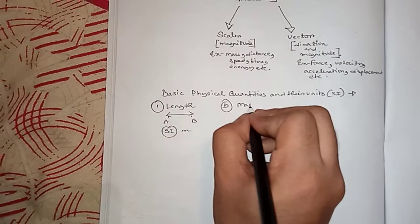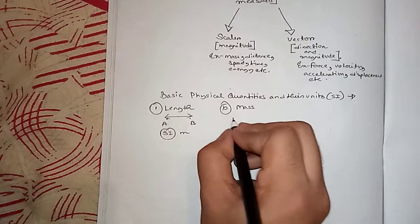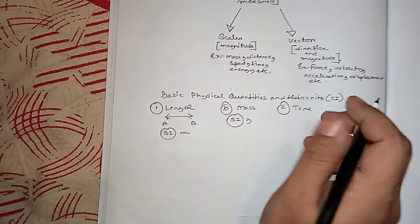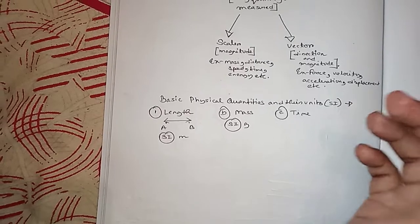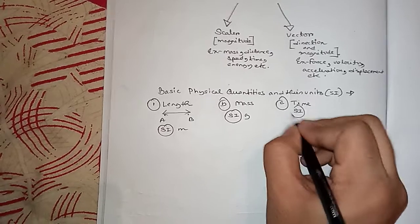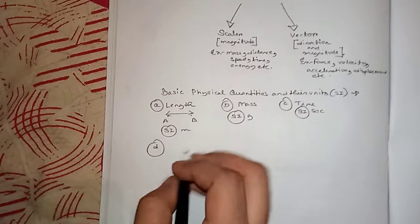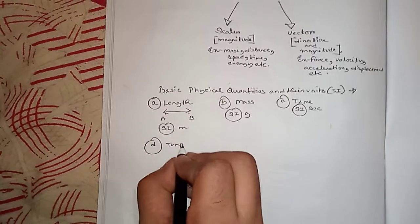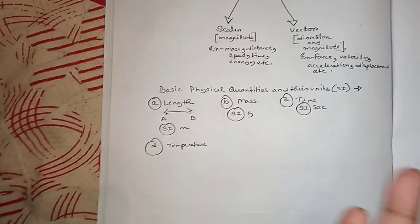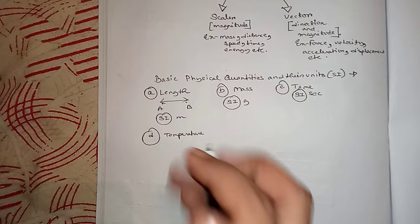Next we have mass. Mass is nothing but the quantity of matter contained in a body. The SI unit of mass is gram. Then we have time. Time is a measurement of the durations of certain events or the intervals between them. The SI unit of time is second. Next up we have temperature. Temperature is the measurement of how hot or cold something is, and more precisely in physics, temperature is the direction in which heat is flowing.